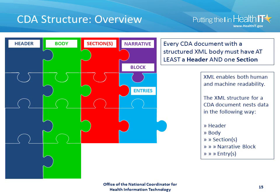Every CDA document that contains structured content must have at least a header and at least one section. XML is used to enable both human and machine readability of CDA documents, and the XML structure for a CDA document nests data in the following way. First, there's a header, and then the body, which contains one or more sections. Within each section, there is first a narrative block, describing in readable terms the information to be conveyed, and then in some cases, there are coded entries which contain machine-readable versions of the clinical information to be described.